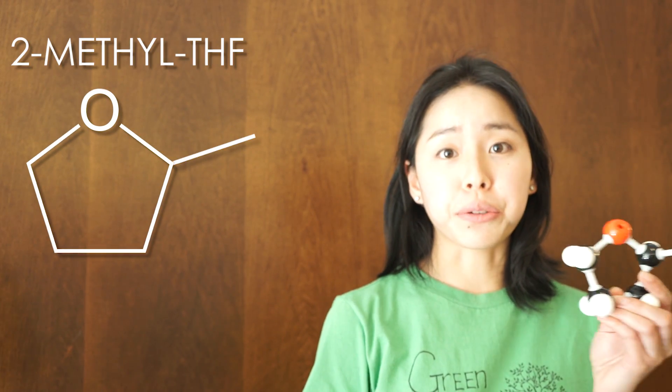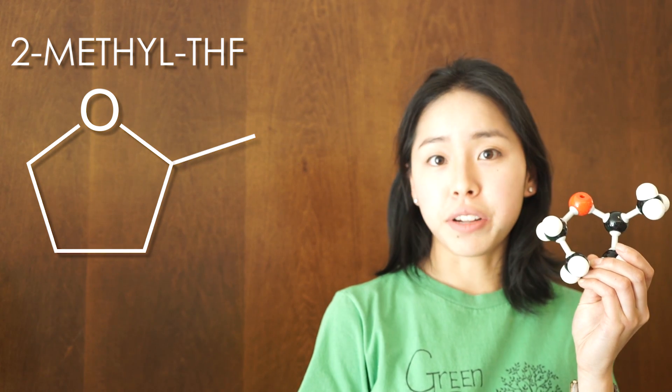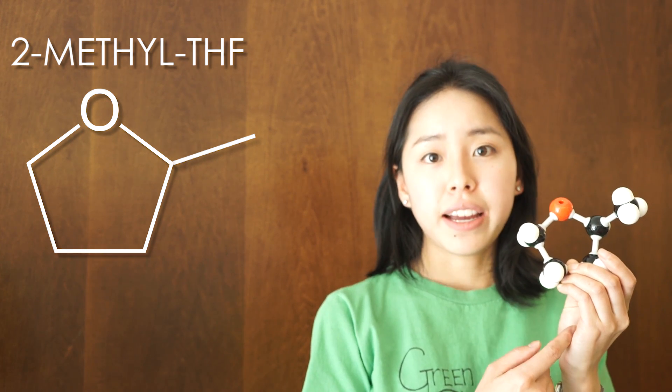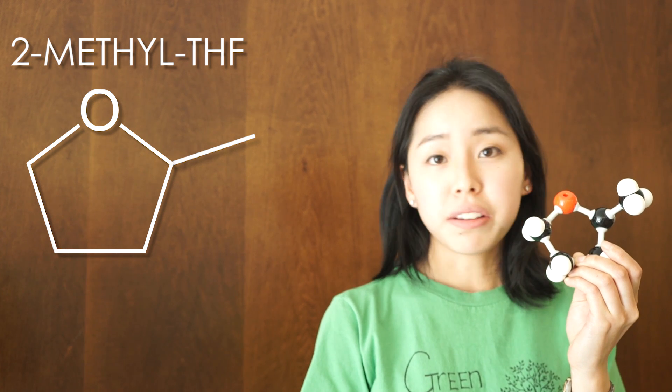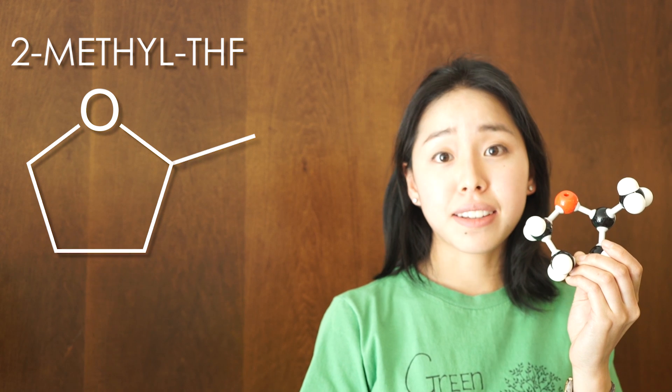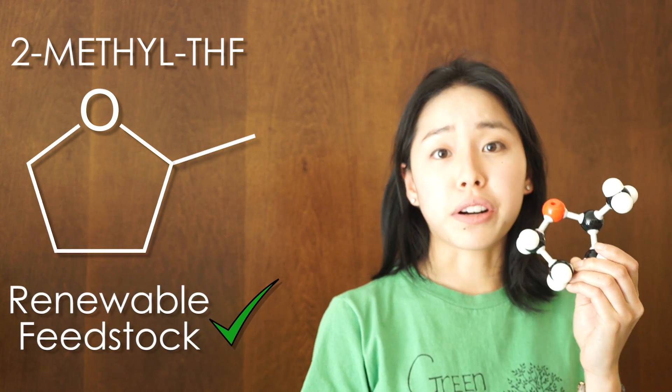An alternative to THF is 2-methyl tetrahydrofuran, or 2-methyl THF, which has a very similar structure to THF and very similar properties as an ether solvent. But 2-methyl THF has the benefit of being synthesized from biomass, which is a renewable resource. Many reactions might specify an ether solvent, but we can carefully choose which ether solvent to use to implement a little bit of green chemistry every day. The substitution of THF for 2-methyl THF in our reactions is just one way in which we can put Principle 7 into action.